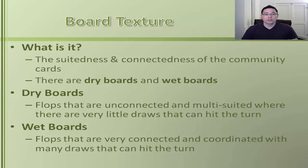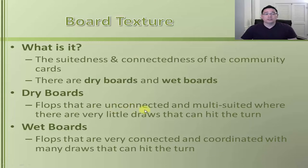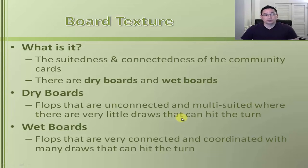A dry board is where the three community cards that come down on the flop are very unconnected and multi-suited, meaning there are multiple suits on the board — for example, one card is a diamond, one is a club, and one is a spade. The main point is that there are very few draws that can hit on the turn or river.